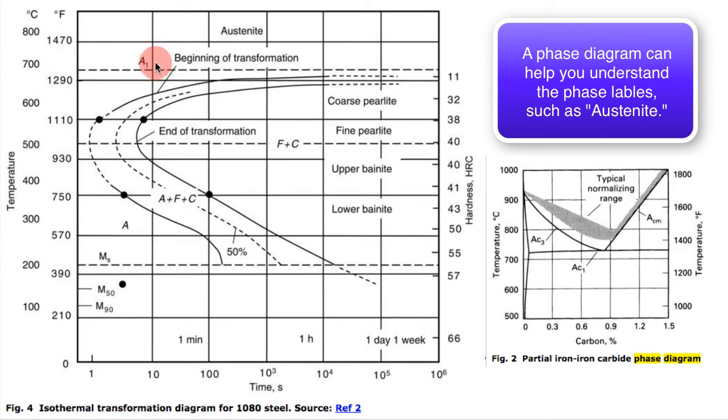For example, this A right here, this A1, indicates that—by the way, this is for a 1080 steel, a plain carbon steel.